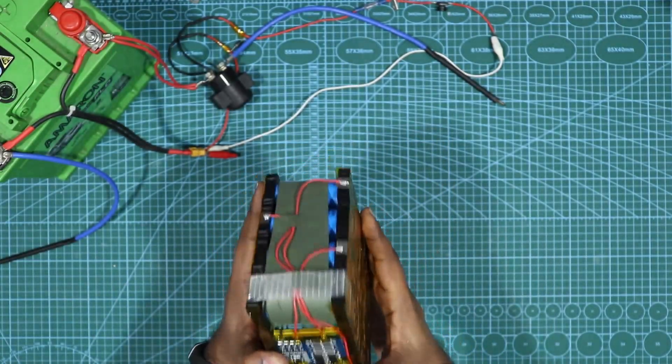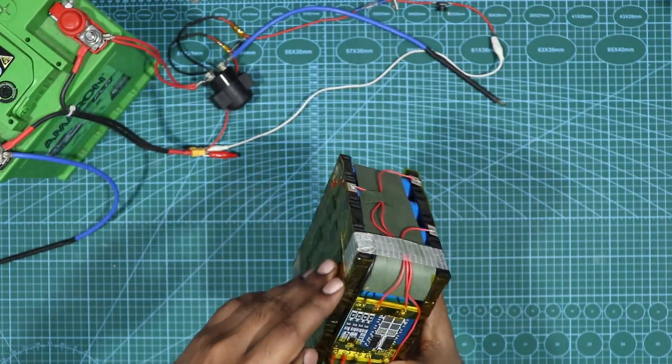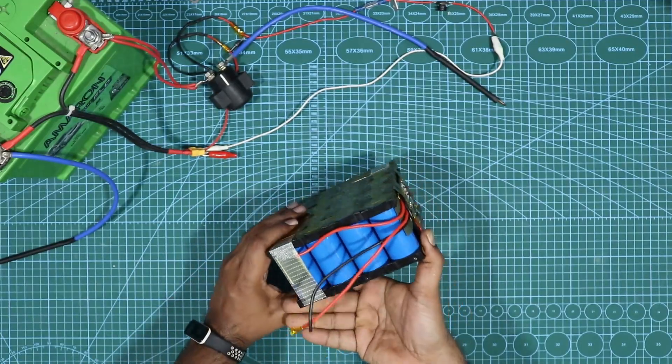And for main negative, it goes to the main negative battery. I have used an 18 gauge wire. The same goes on the positive side as well.